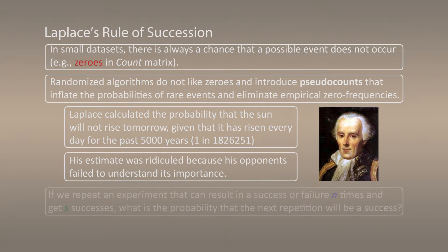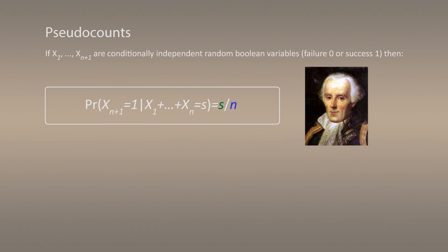Now, if we repeat an experiment that can result in a success or a failure n times and get s successes, then what is the probability that the next repetition will be a success? In other words, if x1, x2, xn+1 are conditionally independent Boolean random variables where failure corresponds to 0 and success corresponds to 1, the traditional way to compute probability of xn+1 is simply compute the fraction of successes among all trials. So it will be s divided by n.